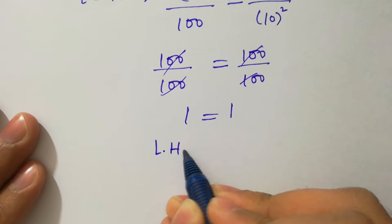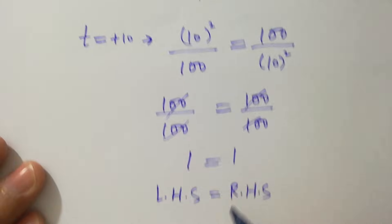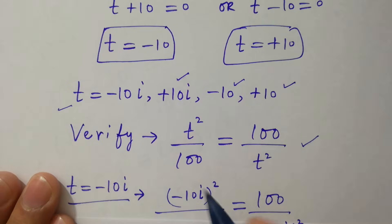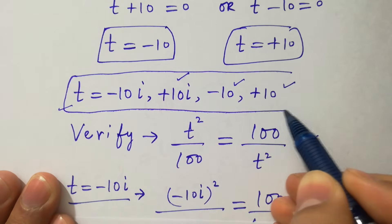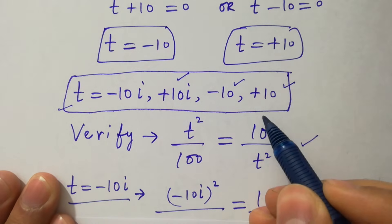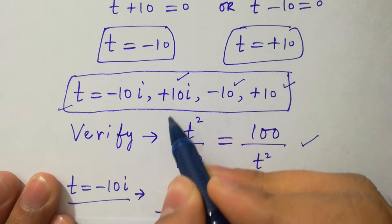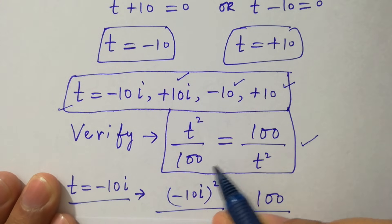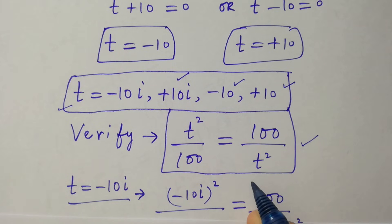Finally, left-hand side equal to right-hand side. From four solutions, this shows that the values of t equal to minus 10i and plus 10i, which are complex solutions, and minus 10 and plus 10, which are real solutions, satisfy this equation t square over 100 equal to 100 over t square. Thanks for watching this video. Please subscribe to this channel to get notifications of my new videos.